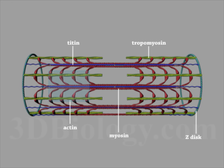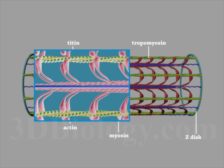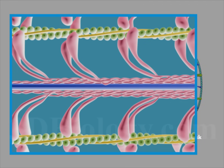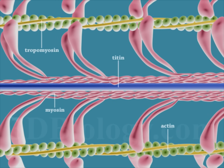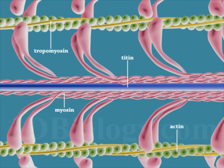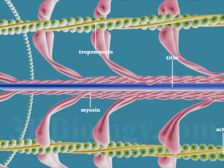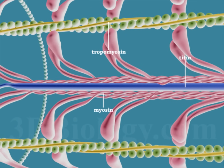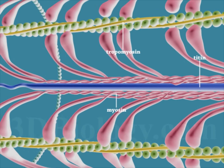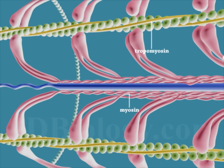The force required for this movement is generated by myosin heads, which make cross-bridge attachments to actin. Myosin heads walk along an actin filament, using ATP for energy.